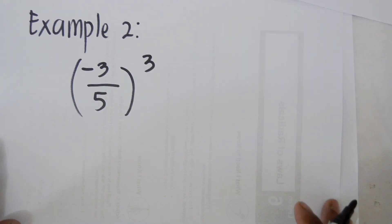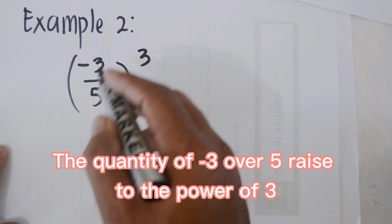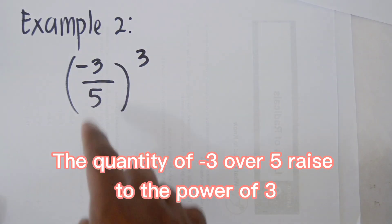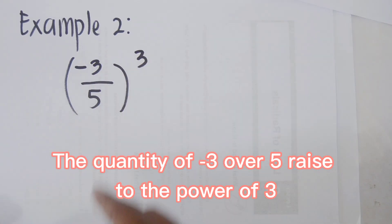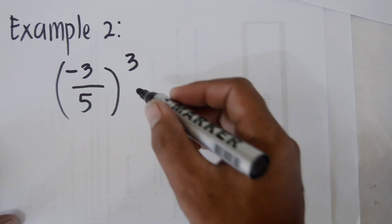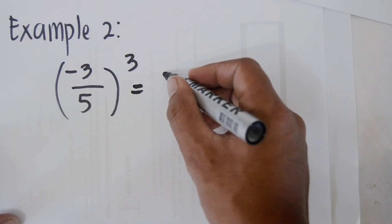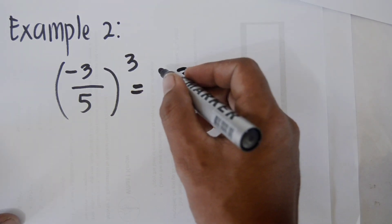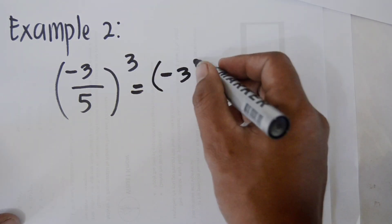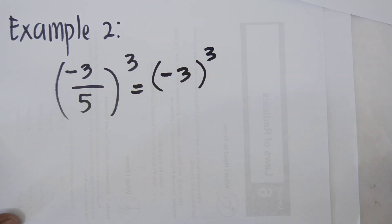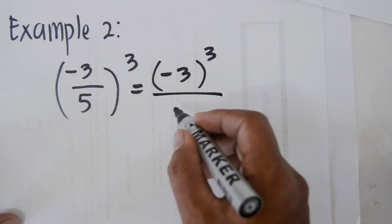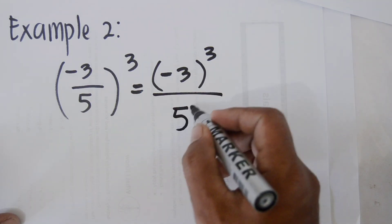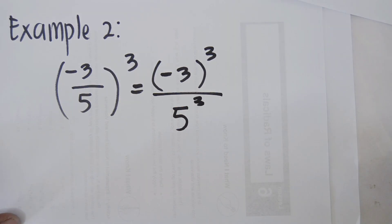Example number two: the quantity of negative 3 divided by 5, raised to the power of 3. Following the rule, we have negative 3 raised to the power of 3 over 5 raised to the power of 3.